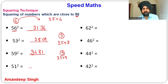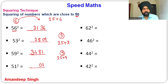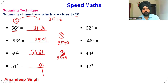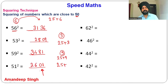For 51²: it is 1 more than 50. 1² = 1, but always write two digits, so write 01. 25 + 1 = 26. So 51² = 2601. Remember: always write two digits for the right part — if you get a single digit write it with a leading zero, and if you get three digits you still only write two.